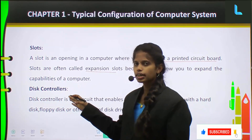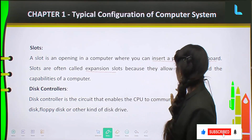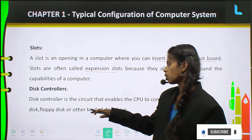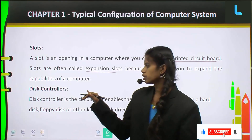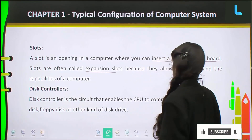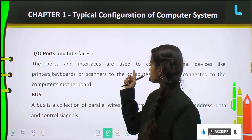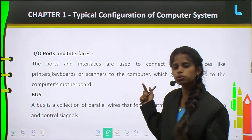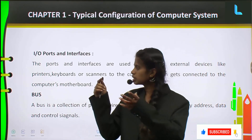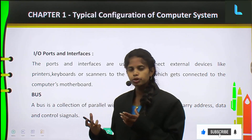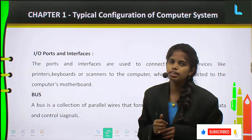Next comes disk controllers. A disk controller is the circuit that enables the CPU to communicate with a hard disk, floppy disk, or other kinds of disk drives. If you want communication between these disk drives and the CPU, you use a disk controller. Next is IO ports and interfaces — these ports and interfaces are used to connect external input/output devices to the computer, which connects to the motherboard.